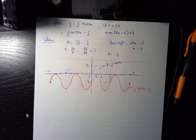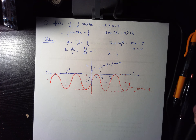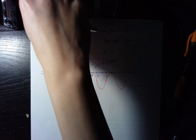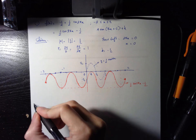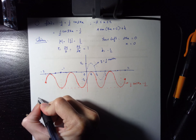That completes the sketch for the first function. It's not that bad — all you have to do is apply transformations: recognize the phase shift and the period, then first graph the parent function on the new period and new amplitude.